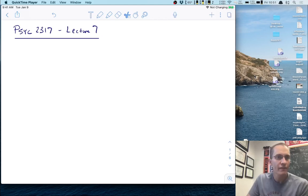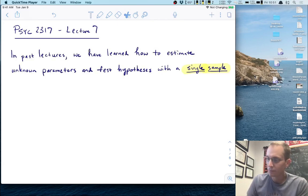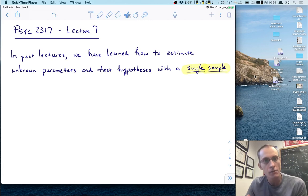Hi, welcome to lecture 7 for Psych 2317 Statistical Methods in Psychology. In our past lectures we have learned how to estimate unknown parameters like population means and to test hypotheses about those means with a single sample.